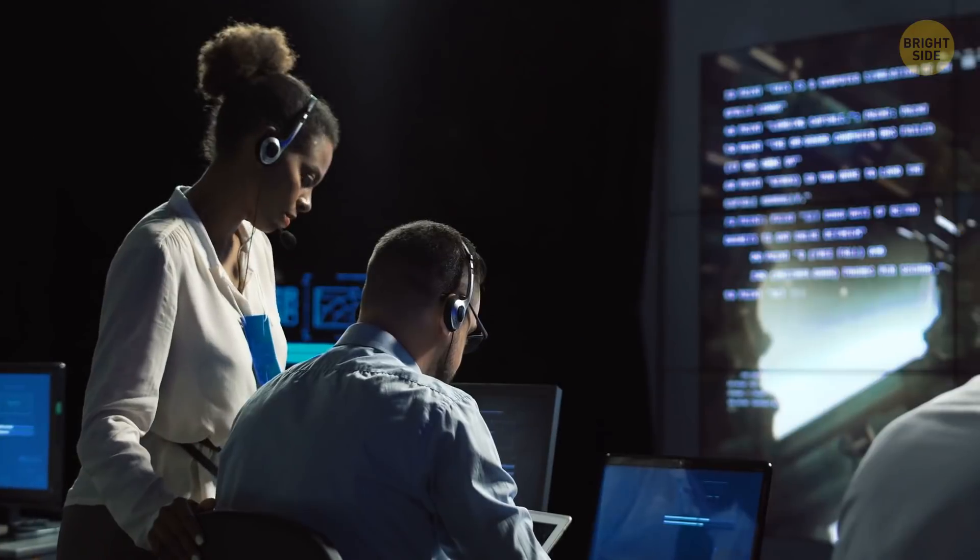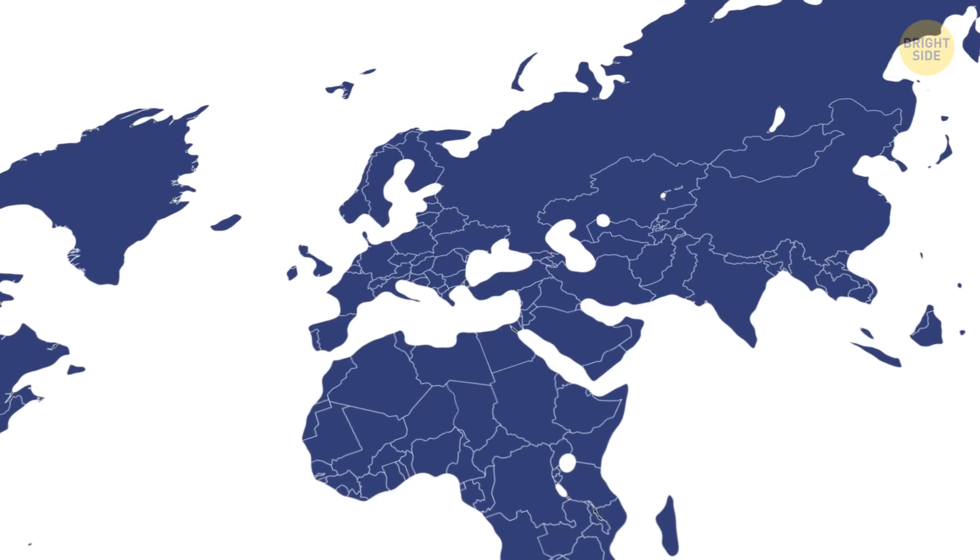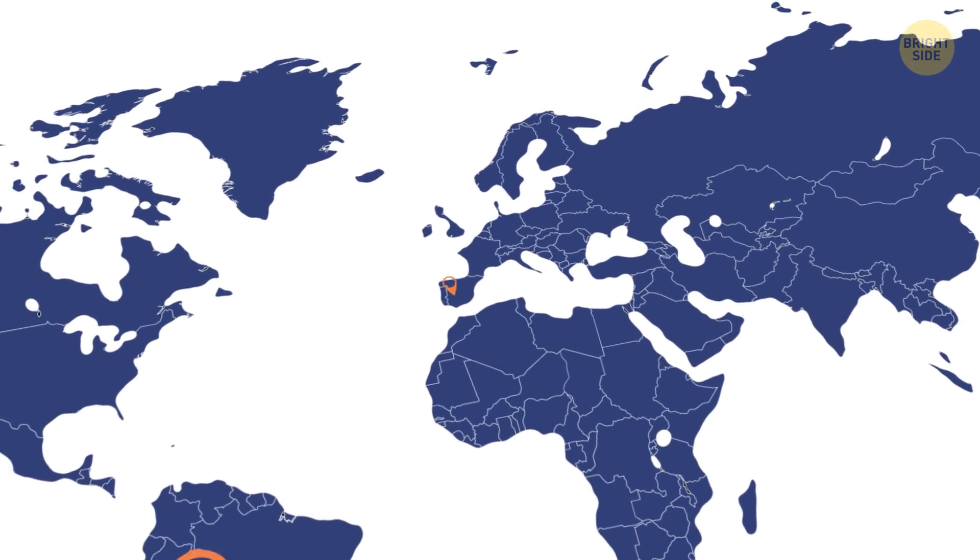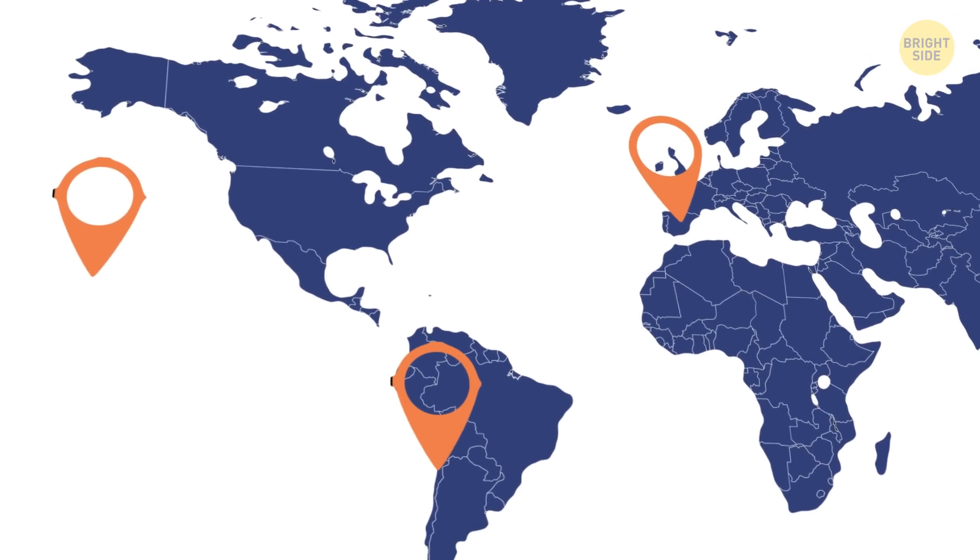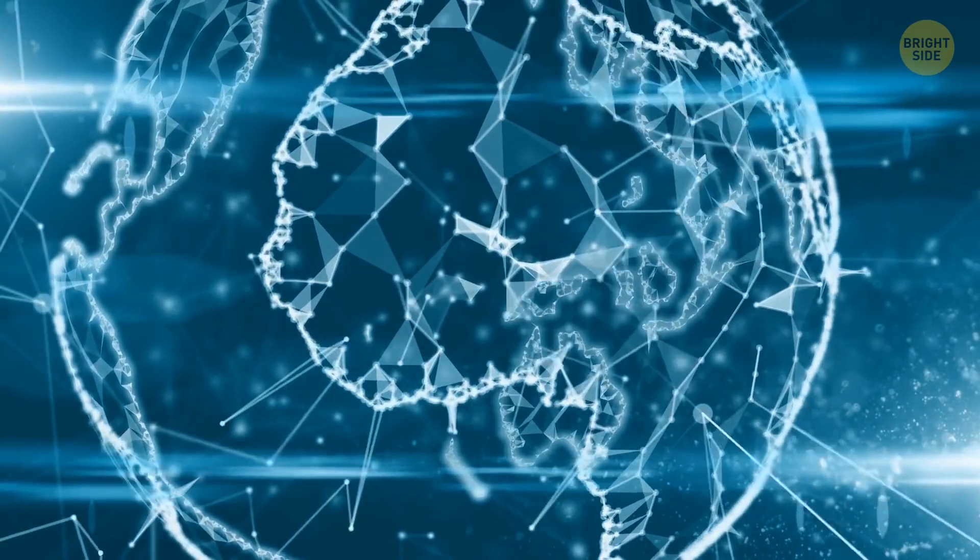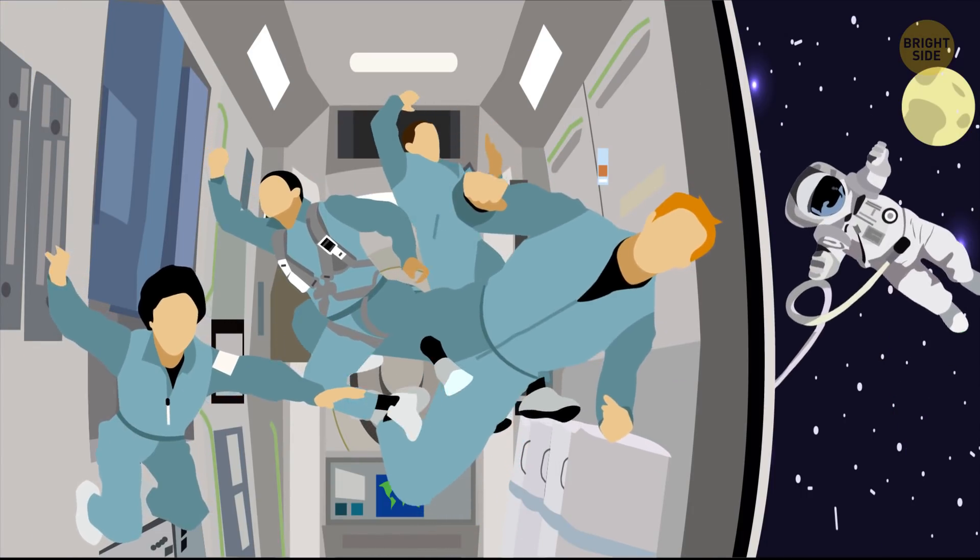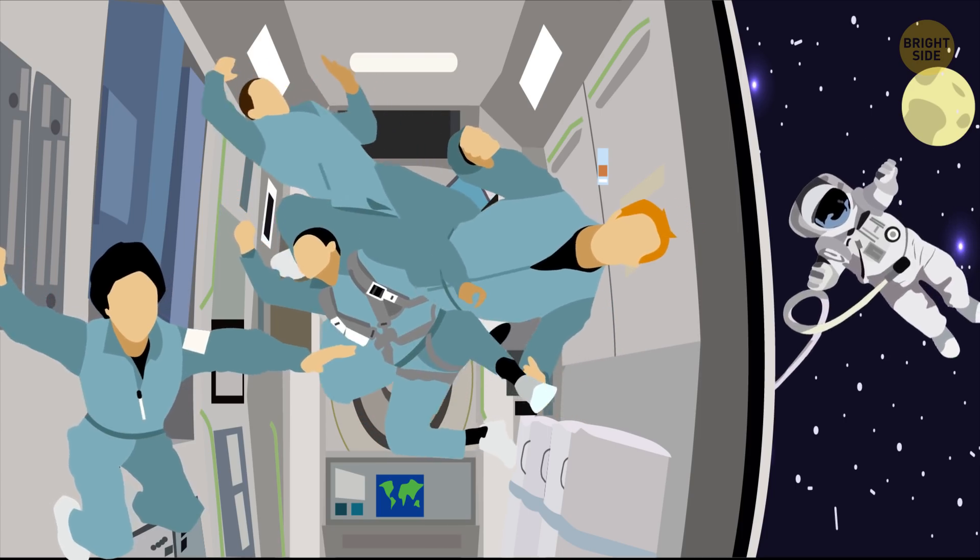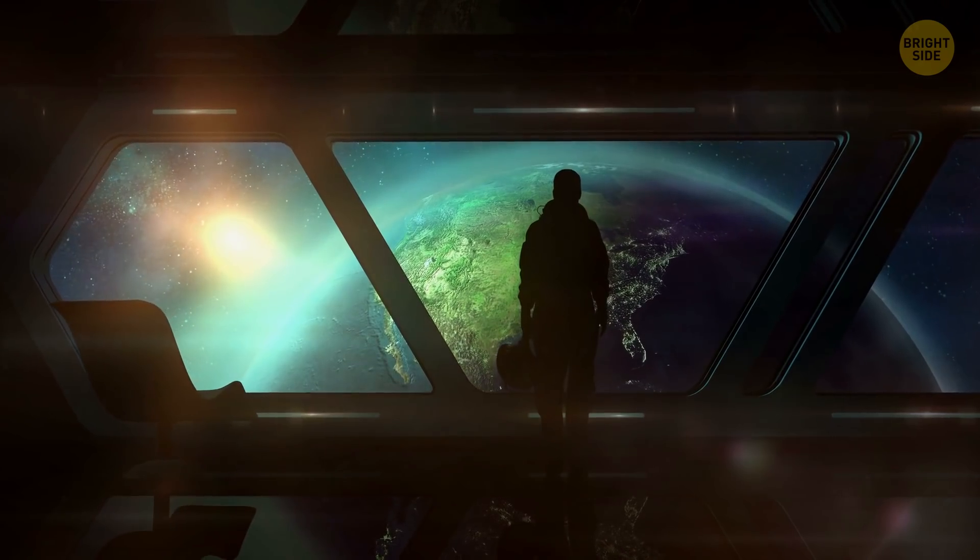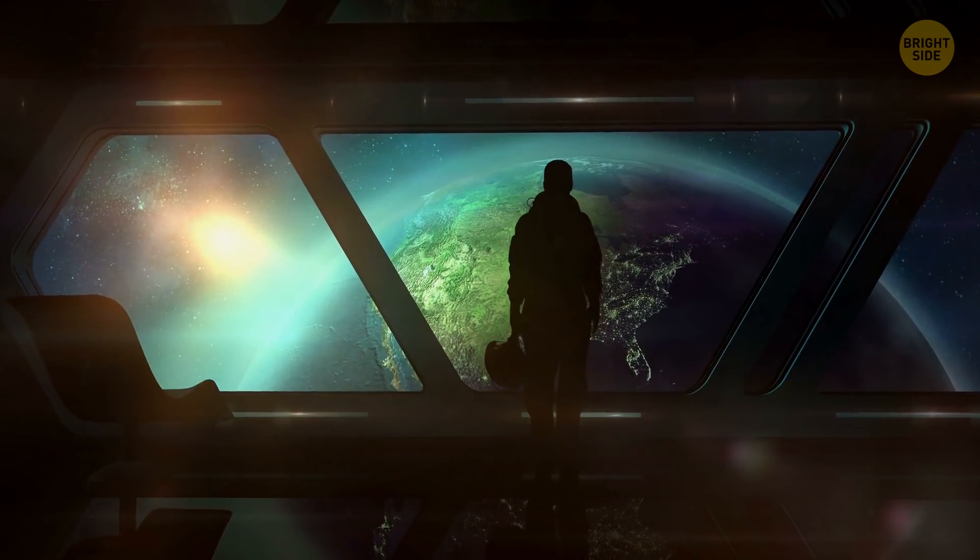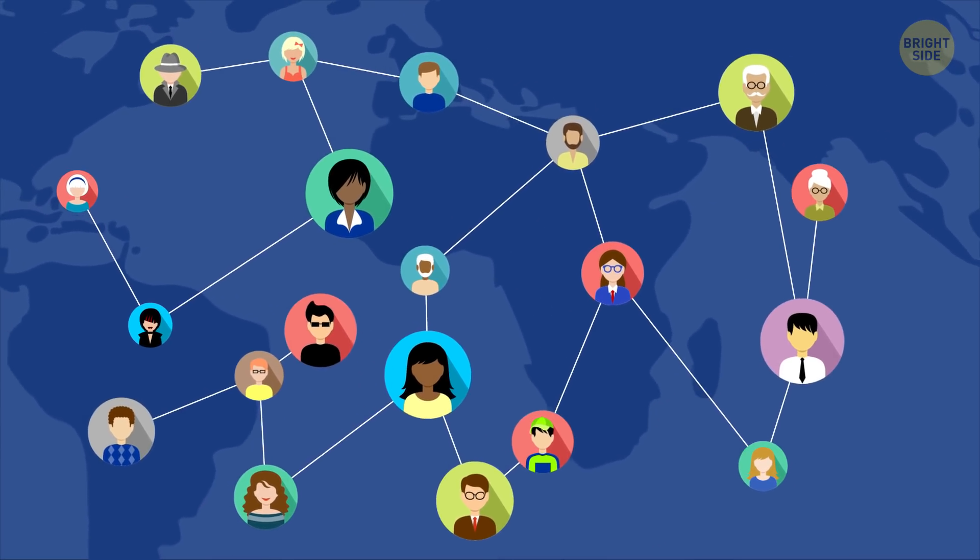While NASA's TESS mission deserves a lot of the credit for finding these planets, they weren't entirely on their own. Data from observatories in Hawaii, Chile, and Spain all contributed to confirming GJ357b's existence, and were vital in identifying the other two planets. This goes to show how some of the greatest discoveries are only possible when we work together. Maybe if we work together long enough, we'll find someone else out there to talk to. Until then, we'll just have to keep looking. And maybe we can learn to talk to each other here on Earth a little nicer.